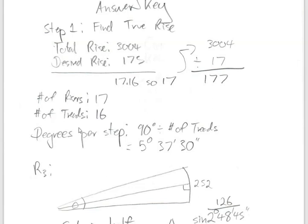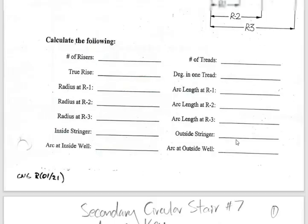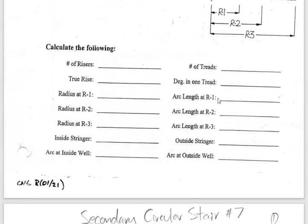The next calculation is the number of degrees per step. Now that we have the number of treads, this stair turns 90 degrees, so we divide that by the number of treads and we get 5 degrees, 37 minutes, and 30 seconds per step.